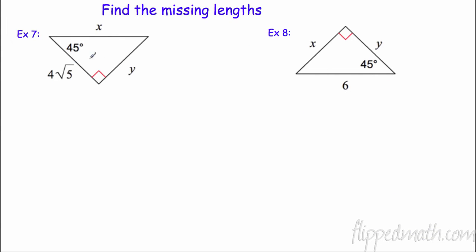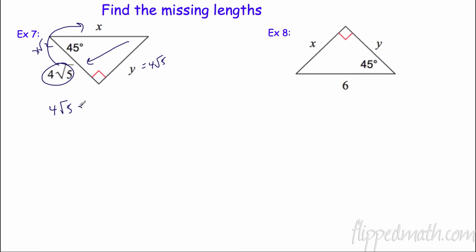Let's try this one. I'm on the short side — a 45° side — so first we know y = 4√5 because the legs are equal. To go to the hypotenuse (the big side), I multiply by √2: 4√5 × √2 = 4√10.